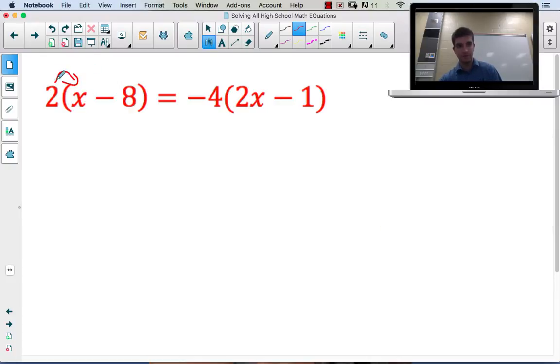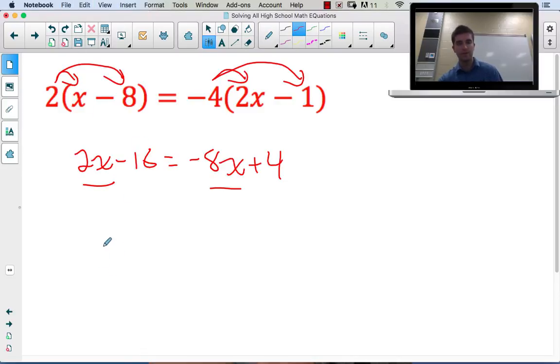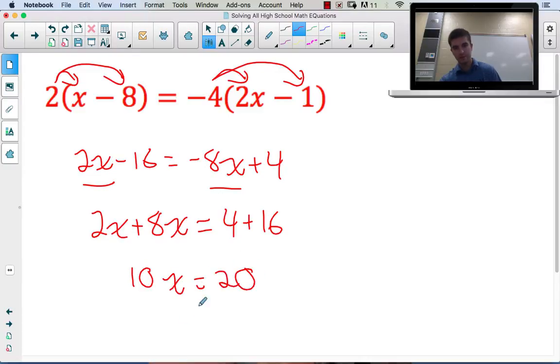Whenever brackets start showing up, it's useful to distribute to get rid of them. So 2x - 16 = -8x + 4. When you have more than one term with a variable, get those terms on the same side. Move the -8x to pair it with 2x, and bring the -16 over by adding 16. Collect like terms, divide by 10, and we get our answer of 2.